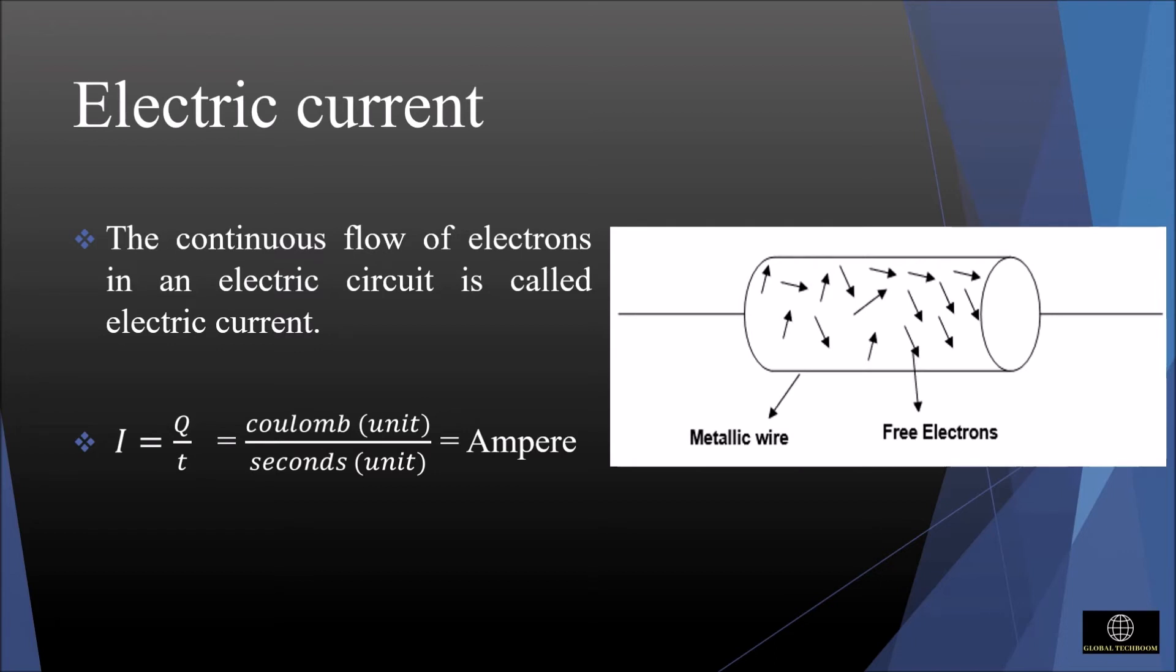The unit of I is Ampere. We can say that 1 Ampere of electric current means 1 Coulomb of charge passing through a conductor in 1 second.